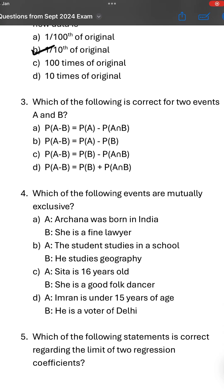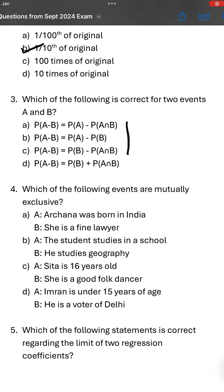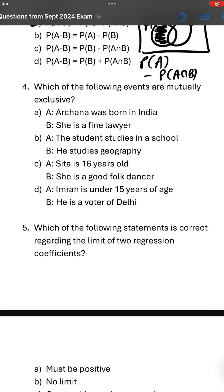Which of the following is correct for two events A and B? Probability of A minus B. What is A minus B? We have to consider full circle of A but subtract the part which is common with B. That means we'll take probability of A but subtract the common part which is intersection. So option A will be the correct answer.